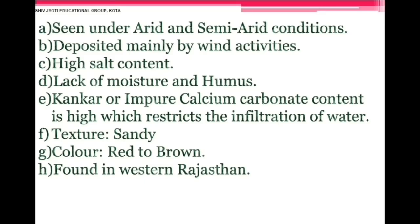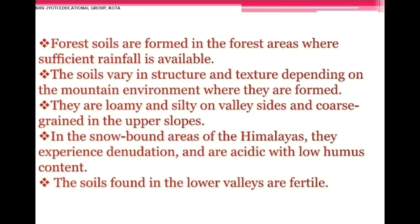Desert soil is found in arid and semi-arid regions, deposited mainly by wind. It has high salt content, lack of moisture and humus, and high calcium carbonate content which restricts water infiltration. Texture is sandy; color is red to brown. Found in western Rajasthan. Forest soils are formed in forest areas with sufficient rainfall. They vary in structure and texture — loamy and silty on valley sides and coarse-grained on upper slopes. In snow-bound Himalayan areas they are acidic with low humus content, while soils in lower valleys are fertile.